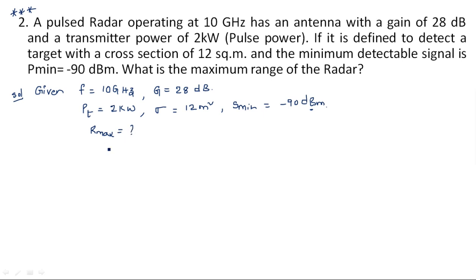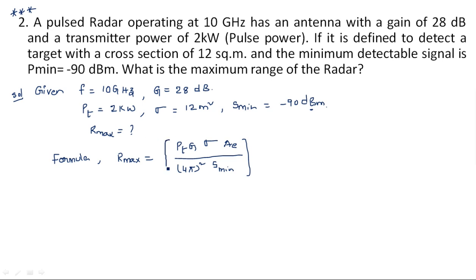We are asked to calculate R_max. The formula is: R_max = [P_t * G * sigma * A_e / ((4*pi)^2 * S_min)]^(1/4). Now checking all given values: P_t is given, G is given, sigma is given, S_min is given — but A_e is not given. So we need to use the relation between G and A_e, which is: G = 4*pi*A_e / lambda^2. All these relations must be known before doing the calculation.